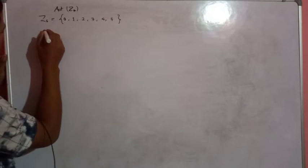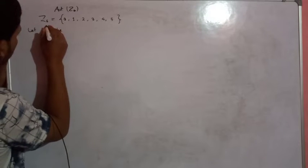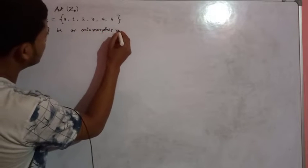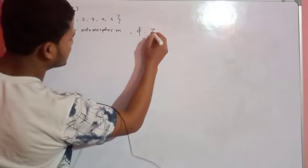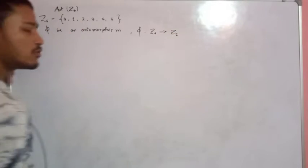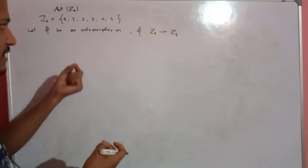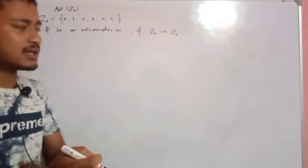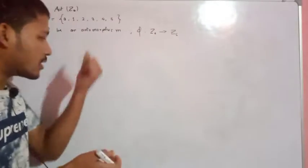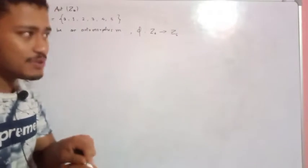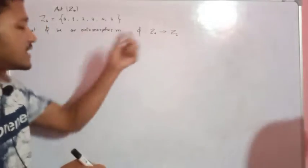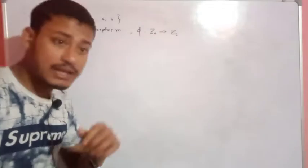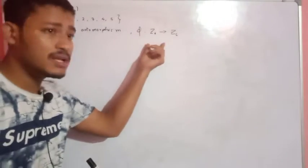You have to find phi. Let phi be an automorphism from Z6 to Z6 — that is, on the same group Z6. An automorphism of Z6 is also an isomorphism on Z6. Isomorphism is between the same groups. According to the property of isomorphism, a generator can be mapped to a generator. The image of a generator must be a generator.